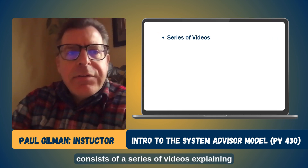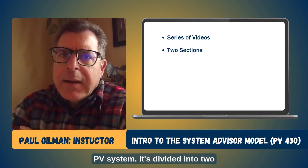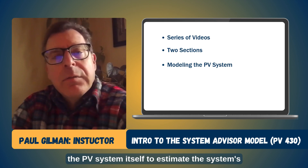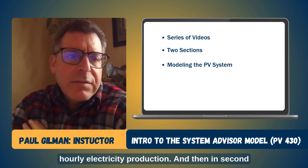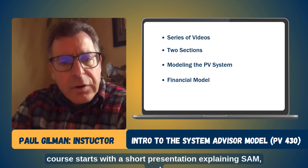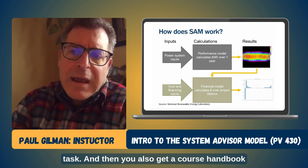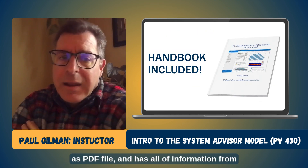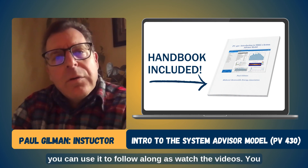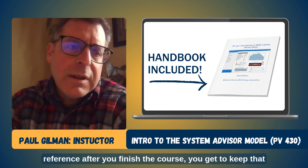PV430 consists of a series of videos explaining and demonstrating the steps for modeling a residential PV system. It's divided into two sessions. In the first one, you practice modeling the PV system itself to estimate the system's hourly electricity production. In the second session, you'll add a financial model that does the cash flow and electricity bill calculations. The course starts with a short presentation explaining SAM, and then each video demonstrates the steps for a specific task. You also get a course handbook as a PDF file with all of the information from the videos, including step-by-step instructions. You can use it to follow along as you watch the videos, use it while doing your homework, and keep it as a reference after you finish the course.